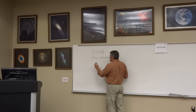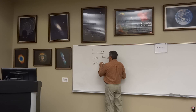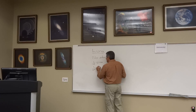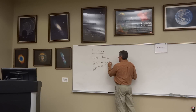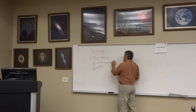The moon is about a quarter of the size of the Earth and about one one-hundredth the mass. You put those two things together and you get a gravity on the moon of approximately one-sixth the gravity of the Earth.